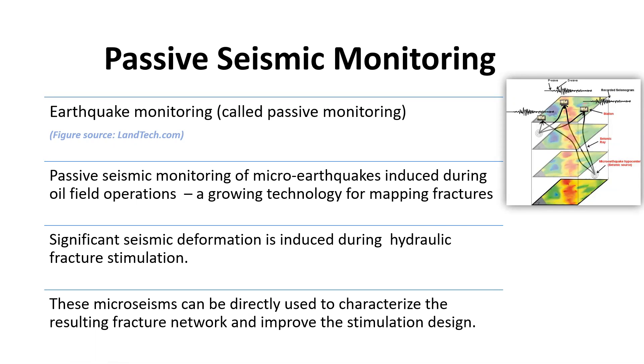Earthquake monitoring has become more precise and accurate even at low level of seismicity. The question arises why I am saying it has become more precise and accurate. The answer is very simple: it is due to the placement of geophones downhole, even here like our stations are on the surface, but in another case we can also place these stations in the borehole away from the surface noise and closer to the source of seismic energy. Passive seismic monitoring of micro earthquakes induced during oil field operations is a quickly growing technology for mapping the fractures.